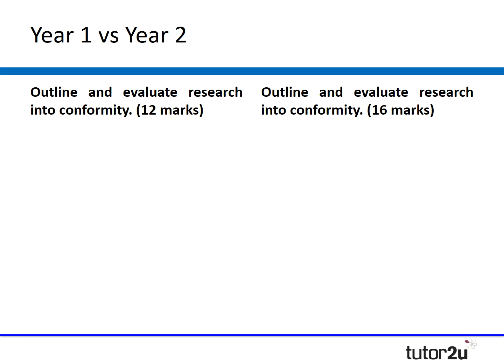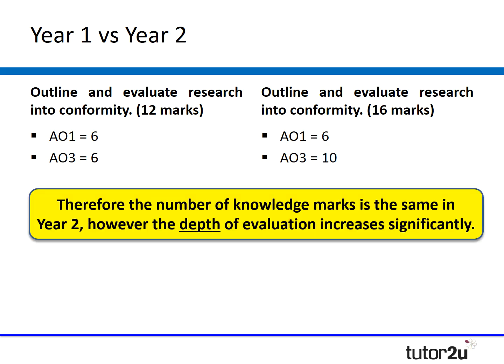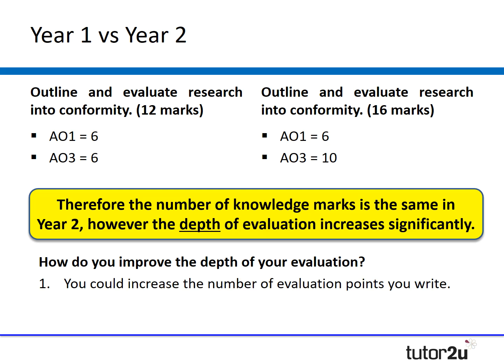I've put two questions on screen — they're exactly the same question, but one is a year-one question worth 12 marks and the second is a year-two question worth 16 marks. It's really important to know that the number of knowledge marks in both year one and year two stays exactly the same — six marks for knowledge in each. Where the difference lies is in the evaluation marks: in year one you were used to six marks for evaluation, but in year two your essays go up to 10 marks for evaluation. That tells us that the depth of your evaluation increases significantly. You could increase the number of evaluation points, simply writing more burger paragraphs, or — what I'm recommending — increase the depth of your evaluation.